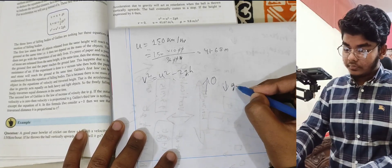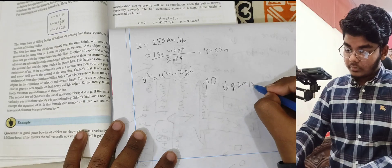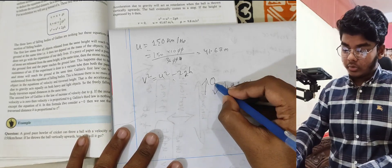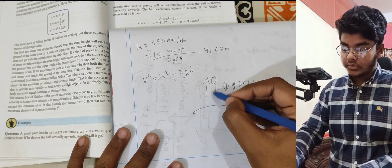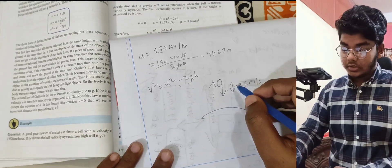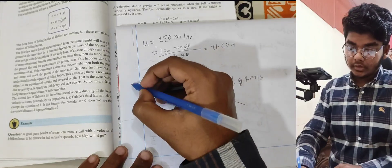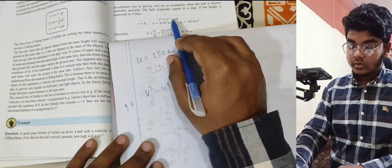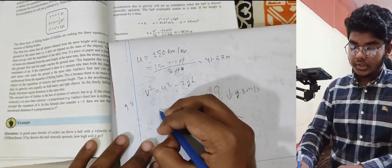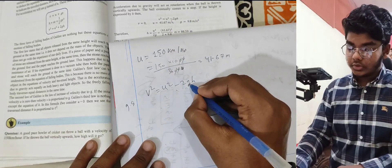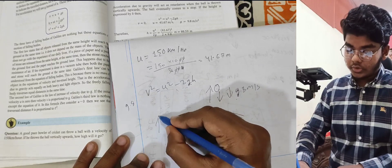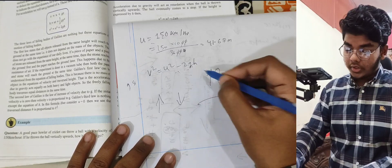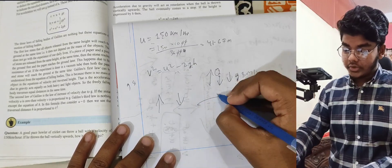g = 9.8 m/s² acts downward, so when the ball is thrown upward, gravity opposes the motion — giving a minus sign: v² = u² − 2gh. At maximum height, the final velocity v = 0.